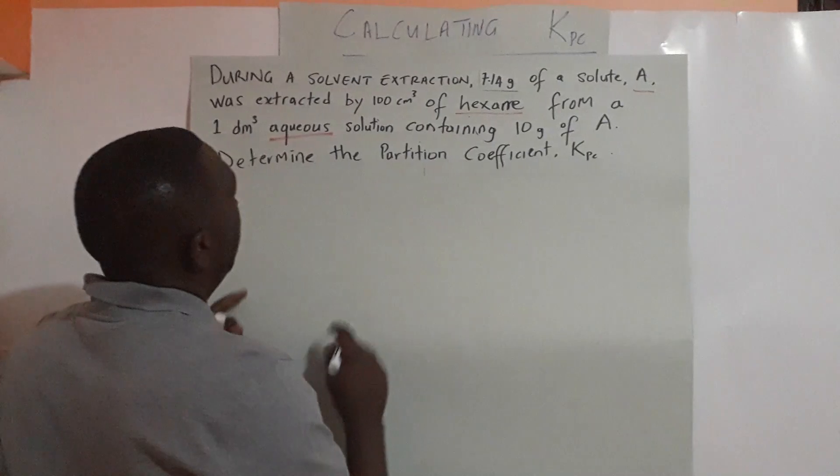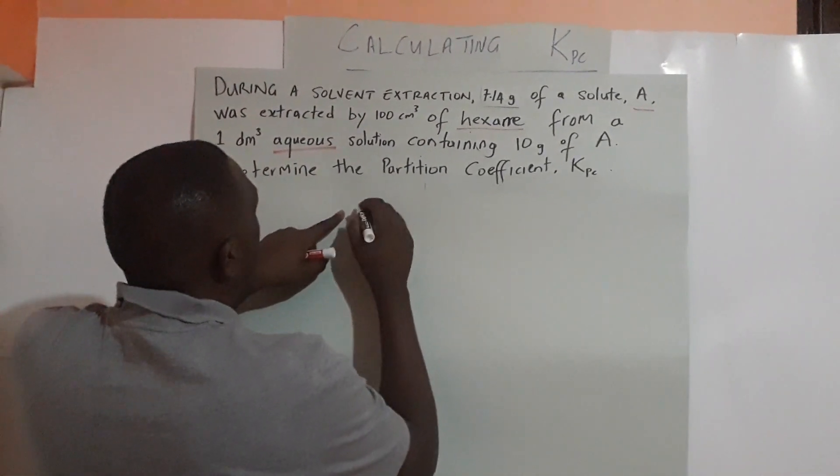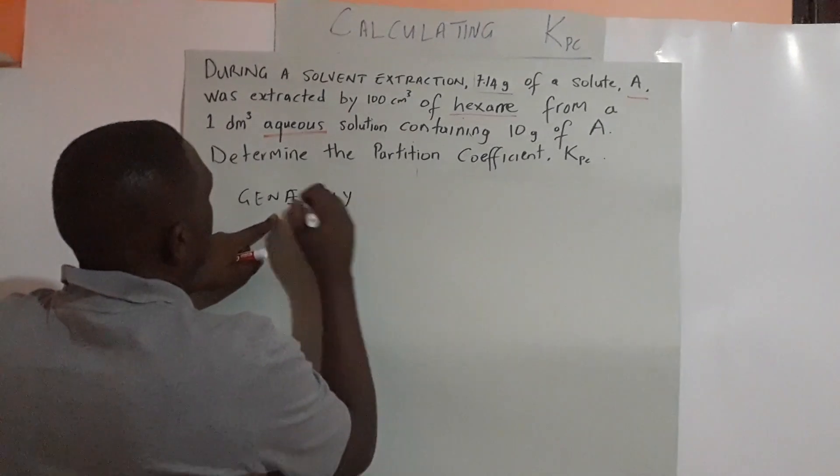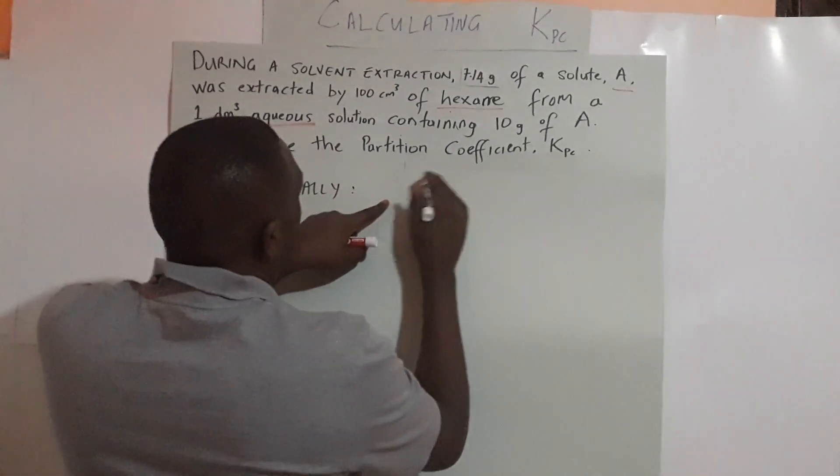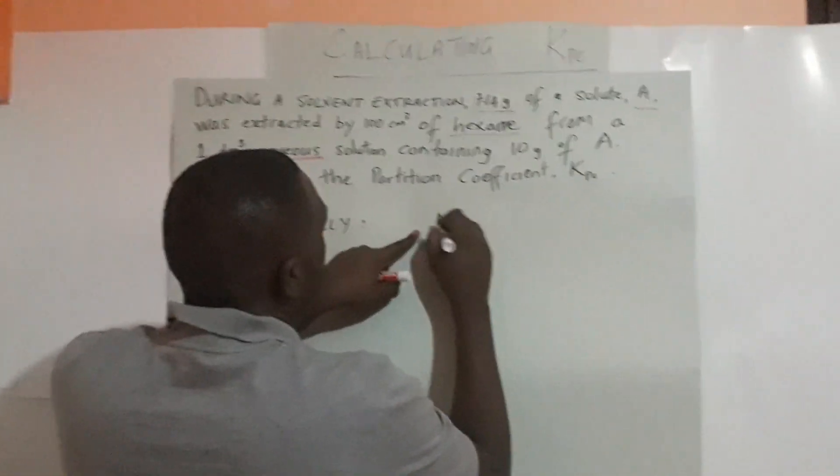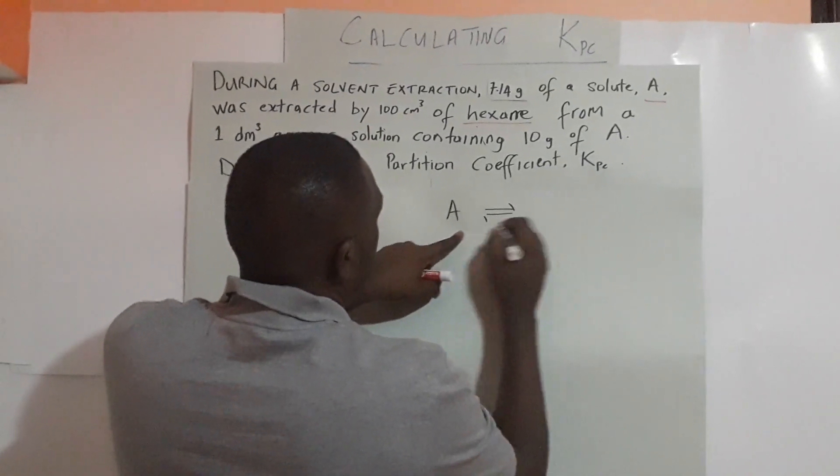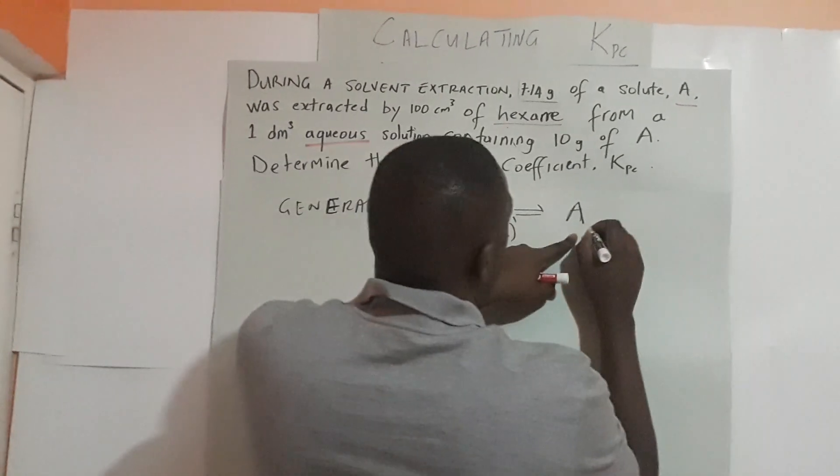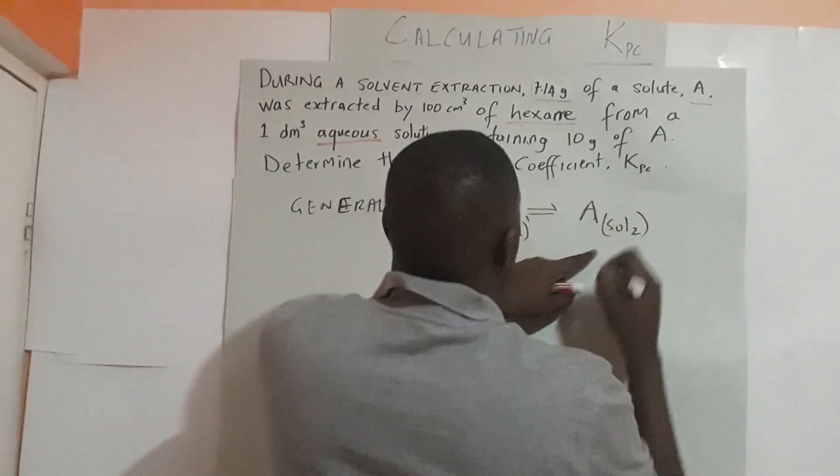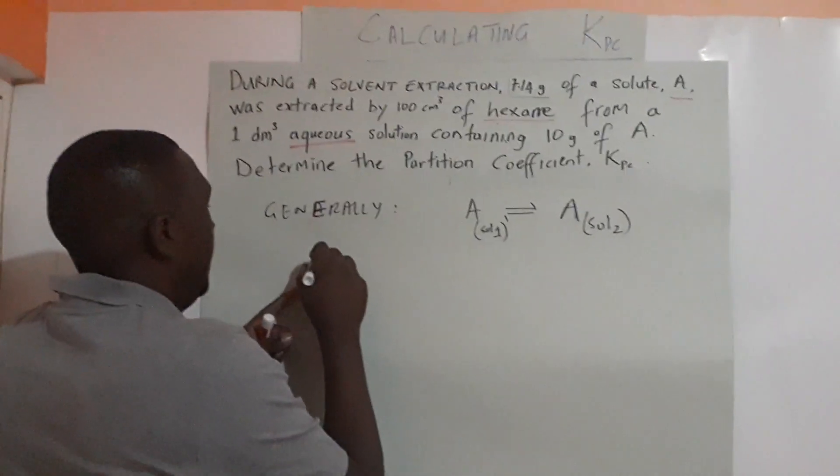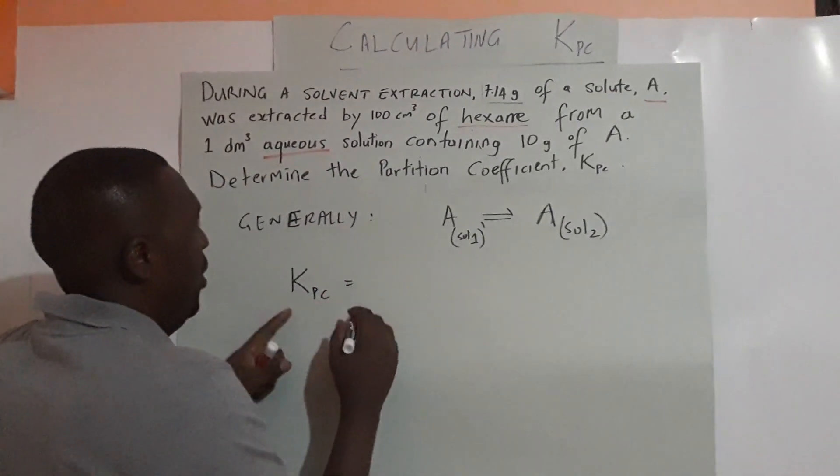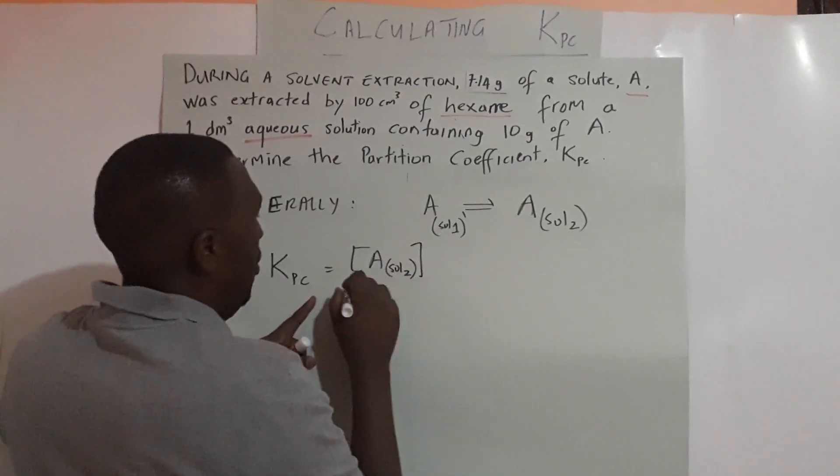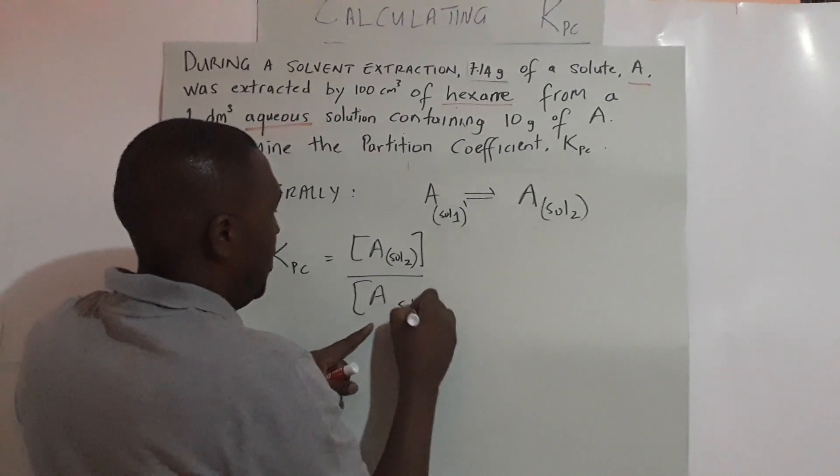Generally, for a reaction where A in solvent 1 goes to A in solvent 2, we can write the equilibrium expression: KPC equals the concentration of A in solvent 2 over the concentration of A in solvent 1.